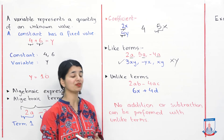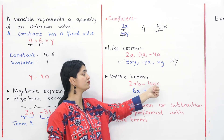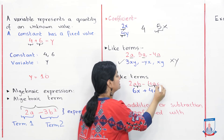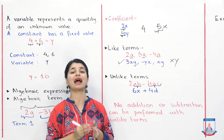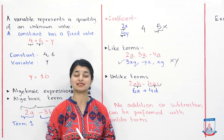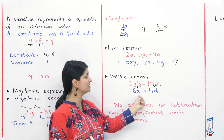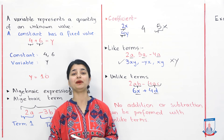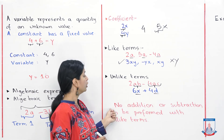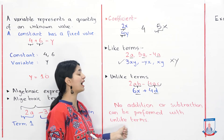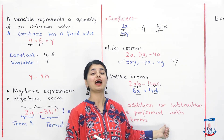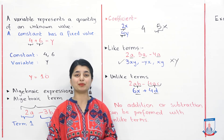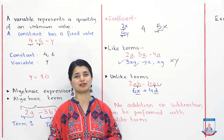Unlike terms are the opposite. For example, 2ab minus 4ac — one has 'ab' and the other has 'ac', so these are unlike terms; they cannot be added, subtracted, multiplied, or divided with each other. Similarly, 6x and 4d — x and d are unlike terms. No addition or subtraction can be performed with unlike terms. We will now do examples so that you understand the difference between like and unlike terms.